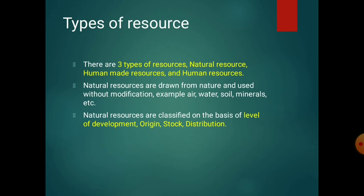Now, types of resources. There are three types: natural resources, human-made resources, and human resources. Natural resources, as the name suggests, are drawn from nature and used without modification — for example, air, water, soil, minerals. Natural resources are classified on the basis of level of development, origin, stock, and distribution.